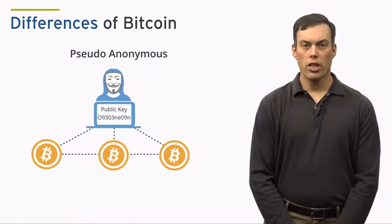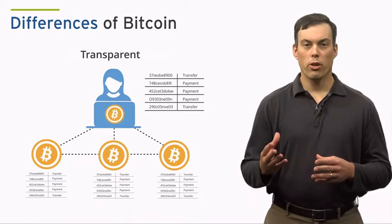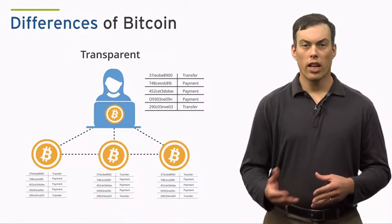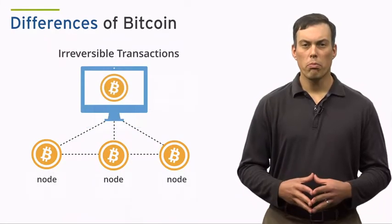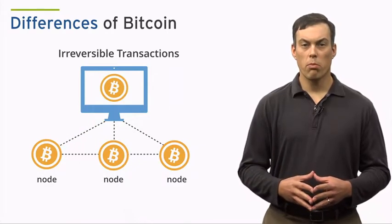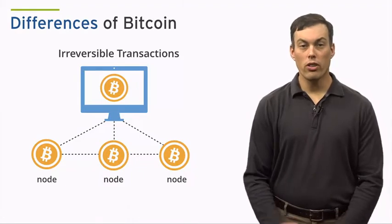Bitcoin is also unique because it is completely transparent. Every transaction in the history of the Bitcoin network is available to all nodes on the network. And finally, unlike fiat currencies, Bitcoin transactions are irreversible. Once a Bitcoin is sent to another node on the network, there is no way for that transaction to be reversed, unless the node who received the original Bitcoin is willing to send it back.